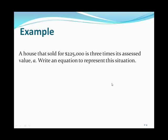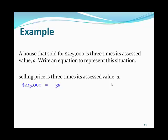Here's another example to translate: a house that sold for $225,000 is three times its assessed value a. We have to set up the equation. The selling price is three times its assessed value, so $225,000 is the selling price, the 'is' becomes the equal sign, and three times its assessed value is 3a. This equation would help us find the assessed value.